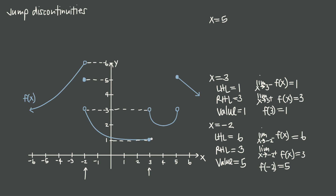The only difference between these two jump discontinuities is that in the second one, the filled-in circle has the same value as the left-hand limit — it was connected to the left-hand piece of the graph — whereas in the first one, the filled-in circle was separate from both the left and right pieces. It doesn't matter whether it's connected to the left-hand piece, the right-hand piece, or floating on its own — wherever you have a filled-in circle, that's the value of your function. You can never have two filled-in circles, because that would mean the graph doesn't represent a function — you'd have multiple output values for the same input.